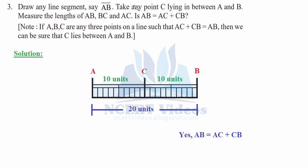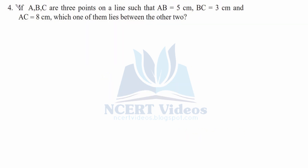Since AB is 20 units, we divide it into 10 plus 10 units. Counting: one, two, three, four, five, six, seven, eight, nine, ten — so CB is 10 units. AC is again 10 units. We check: AB equals AC plus CB — yes, 10 plus 10 gives 20 units. Therefore AB equals AC plus CB, which is true. If A, B, C are any three points on a line such that AC plus CB equals AB, then we can be sure that C lies between A and B.